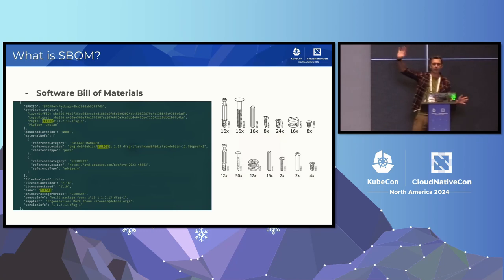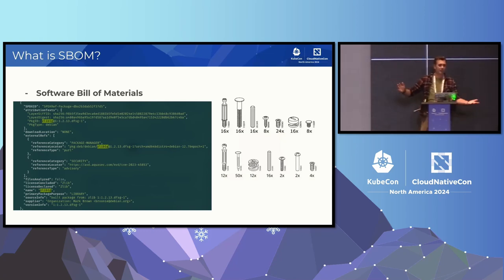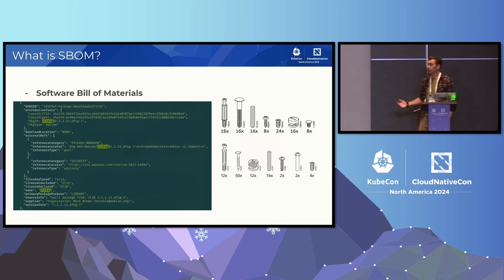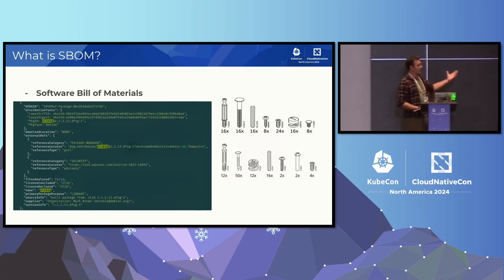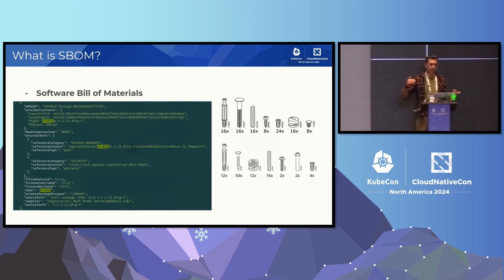I'm in the wrong room then. Software bill of materials is not a new concept. It was used in manufacturing for many, many years. It was recently introduced in software — pretty much it's a list of all your components of the things that you're going to ship.